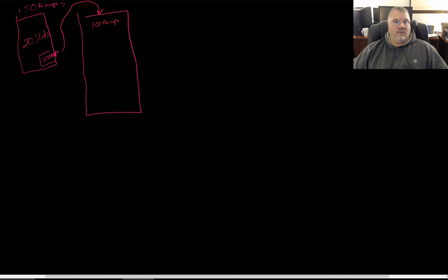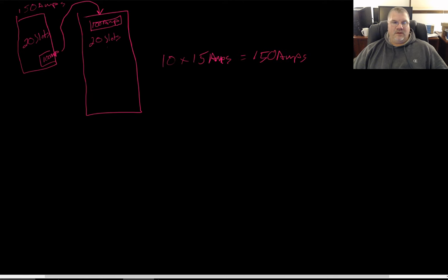Now I want to add a sub panel. From the main 150-amp panel I had two free slots, so I put in a 100-amp breaker there and ran wire to the sub panel, which also has a 100-amp breaker — that way I can switch in both places. The sub panel also has 20 slots. If I fill it with ten 15-amp breakers that's 150 amps on paper, but again, not everything will be on at the same time.